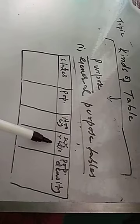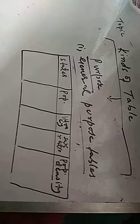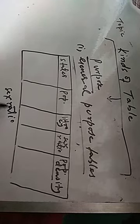Sex ratio is defined as the number of females per thousand males. Population density shows the number of persons per square kilometer. These figures are published in the census report by the Director General and Census Commissioner of India. These are examples of general purpose or reference tables — they act as a repository of information.